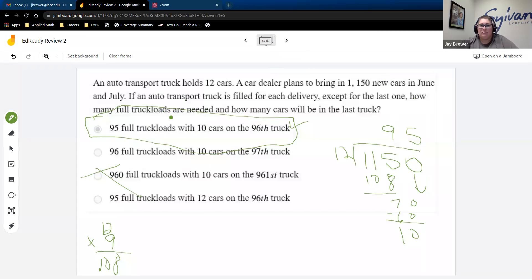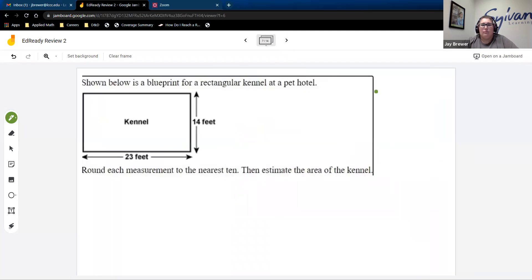If you had this as a completion problem instead of a multiple choice problem, you would just write it out the same way they're writing it: 95 full truck loads with 10 cars on the 96th truck. And also pay attention to what they want. So this is how many full trucks are needed and how many cars will be on the last truck. So some of your math teachers might have a different question, but you would have the same numbers in the same situation. So just be careful. Okay.